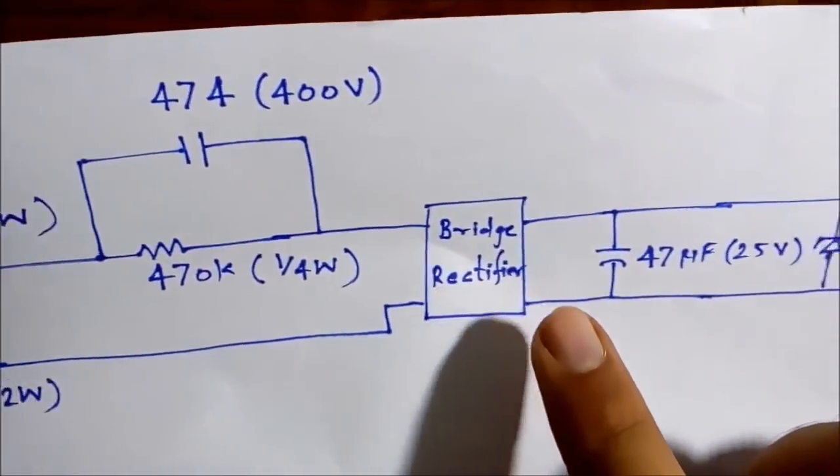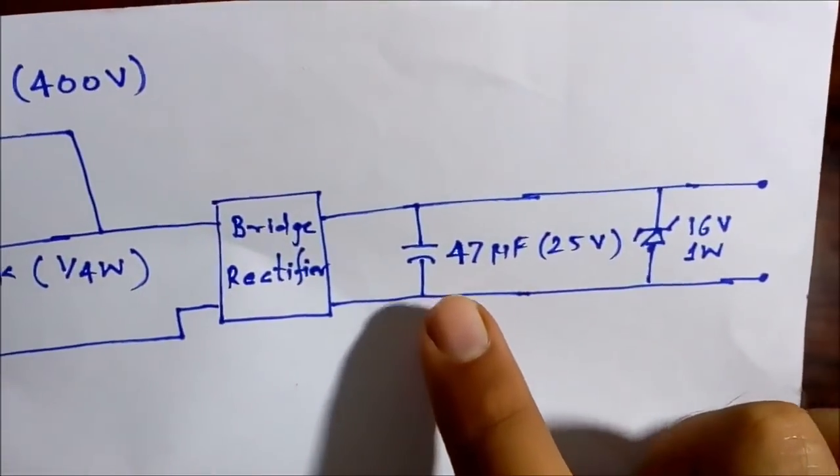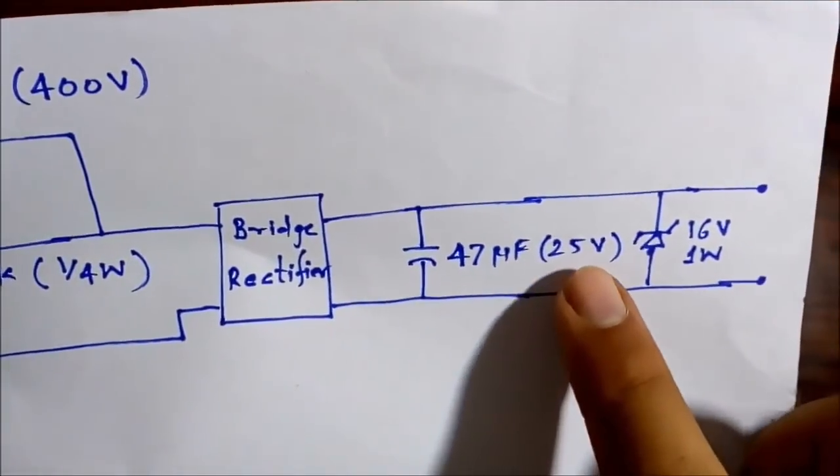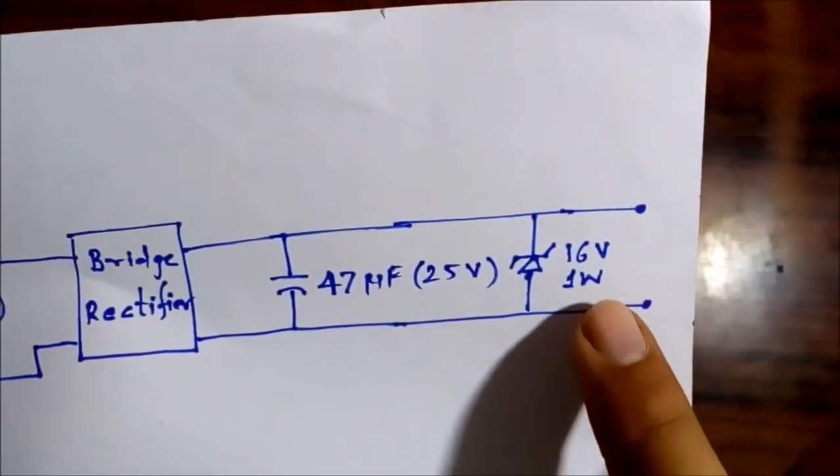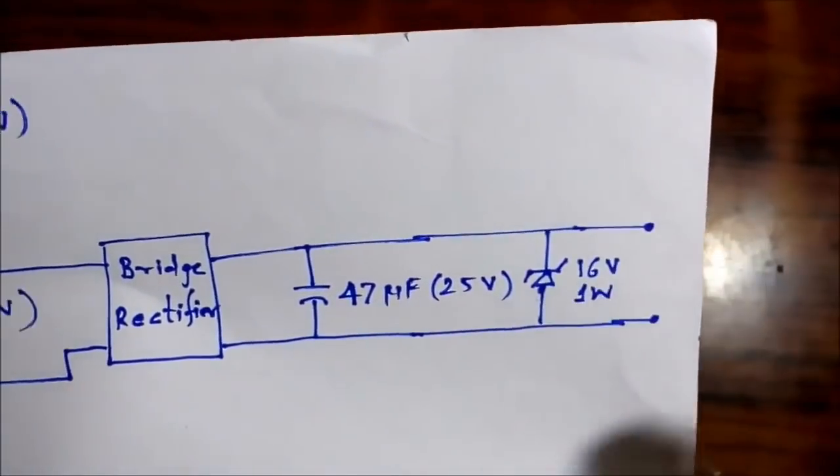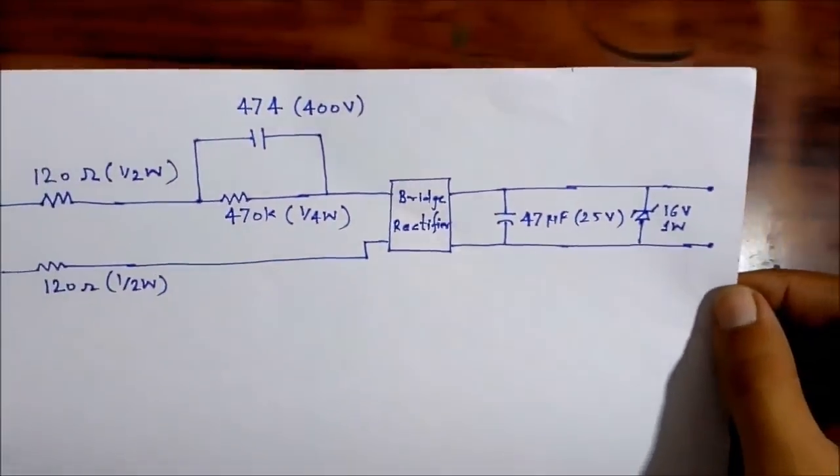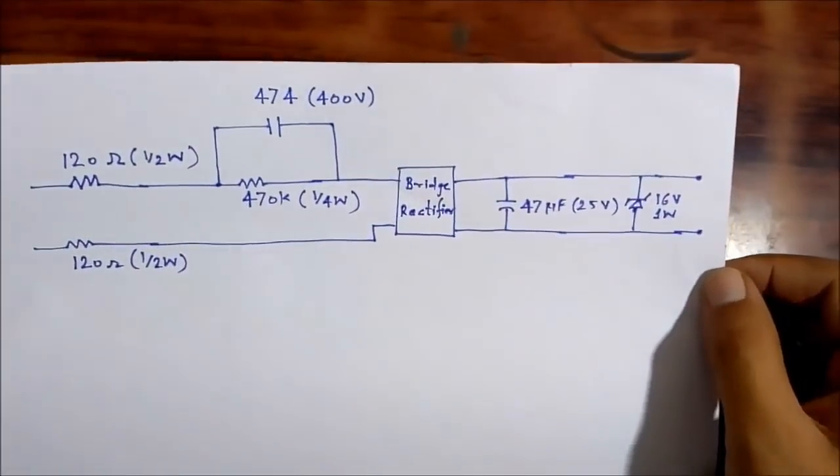This is a bridge rectifier that you can make using four diodes. This is a 47 microfarad electrolytic capacitor and the voltage is 25 volt. And this is a 16 volt 1 watt zener diode and these are the output terminals. So let's make this on a general purpose PCB.